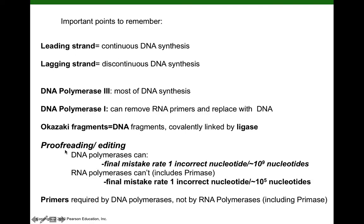This reminds me that on lecture exam 2, one of the short answer questions will be a table comparing and contrasting DNA polymerases to RNA polymerases. DNA polymerases make DNA; RNA polymerases make RNA. But a more significant difference: DNA polymerases can perform a process called proofreading or editing. If DNA polymerase has just added a new incoming nucleotide and that nucleotide doesn't carry the correct nitrogenous base, so you don't get correct hydrogen bonding between that new nucleotide and the template strand, DNA polymerase can get rid of that incorrect nucleotide and try again.